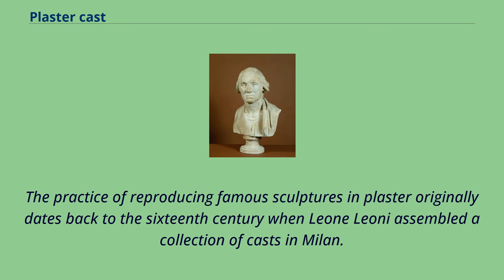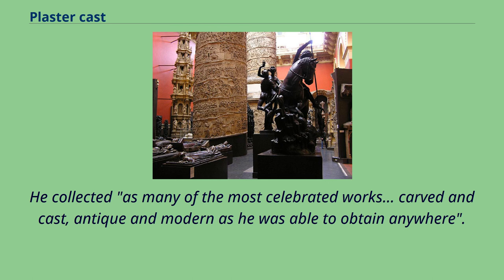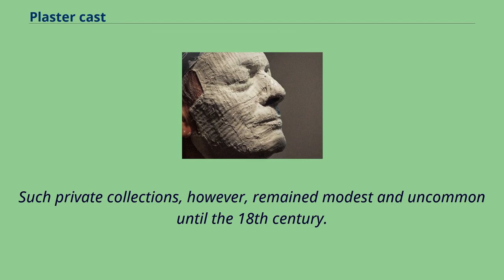The practice of reproducing famous sculptures in plaster originally dates back to the 16th century, when Leon Leoni assembled a collection of casts in Milan. He collected as many of the most celebrated works — carved and cast, antique and modern — as he was able to obtain anywhere. Such private collections, however, remained modest and uncommon until the 18th century.